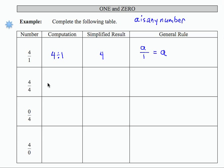For 4 over 4, that's 4 divided by 4 as a computation. Any number divided by itself, 4 divided by 4, gives me 1. So I can make a general rule: A over A equals 1.